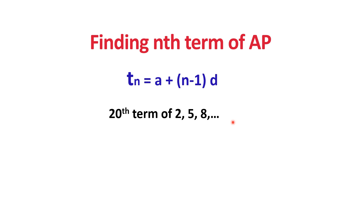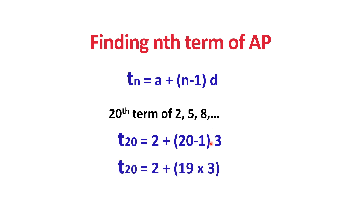Applying the formula: T20 = A + (N − 1) × D = 2 + (20 − 1) × 3 = 2 + 19 × 3 = 2 + 57 = 59. So, the 20th term of this series is 59. By knowing only the first few terms, we can find the 20th, 50th, or 100th term of a series using this formula.